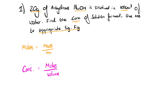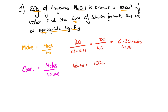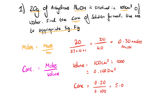Moles equals mass over MR, so moles of NaOH = 20 ÷ 40 = 0.5 moles. Converting the volume: 100 cm³ ÷ 1000 = 0.1 dm³. Concentration = 0.5 ÷ 0.1 = 5.0 mol dm⁻³. An appropriate number of significant figures matches the least accurate data — 20 grams has two significant figures — so the answer is 5.0 mol dm⁻³.